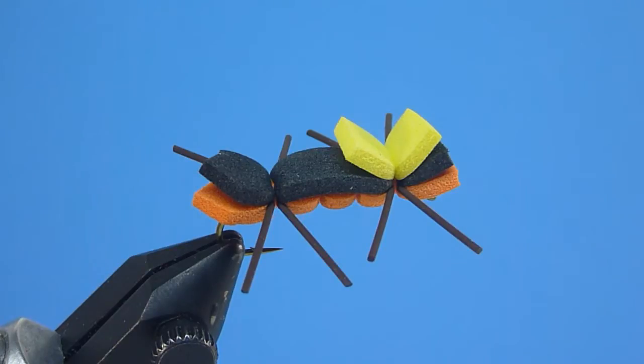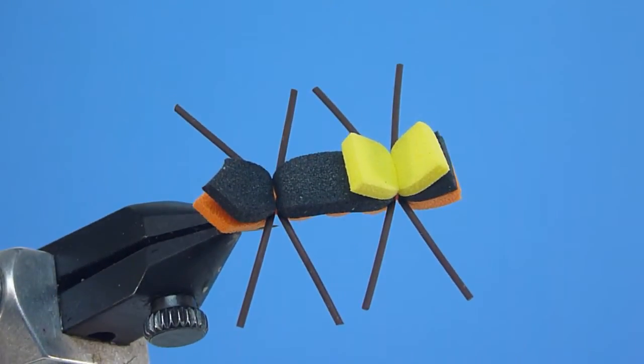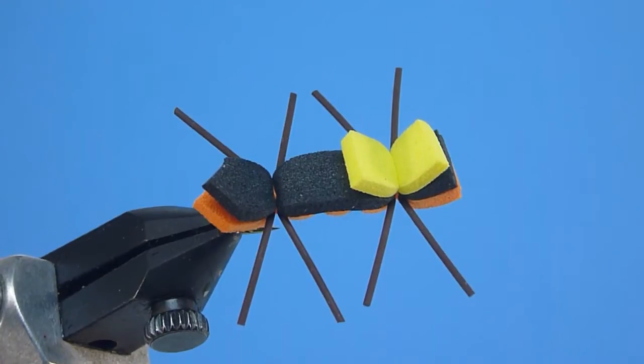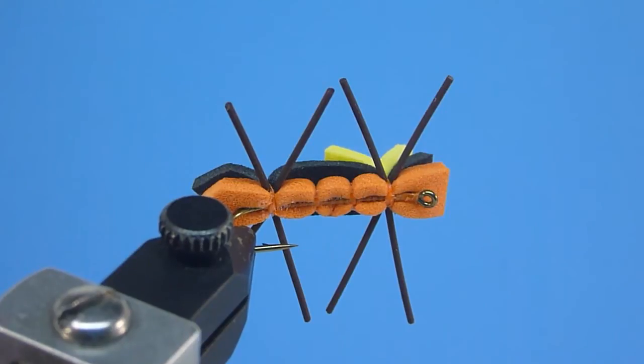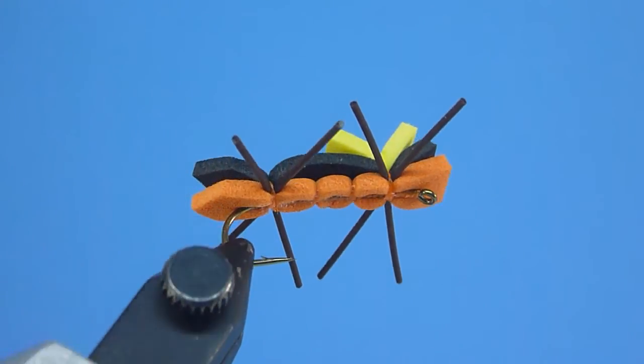Hey guys, Nate Harris here with Stone River Outfitters. Thanks for joining me. In today's tutorial, I'm going to share with you how to tie a simplified black over orange fast food version of a high-floating, all-foam favorite, the exceptionally deadly Chernobyl ant.